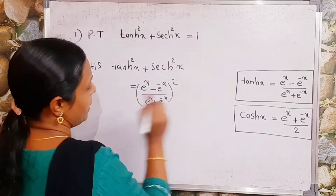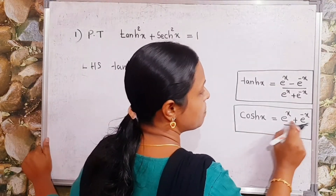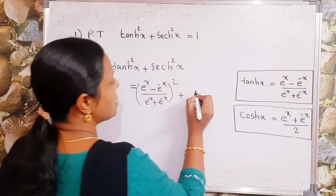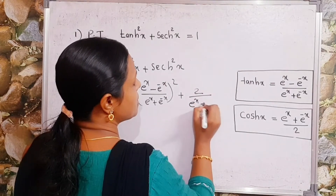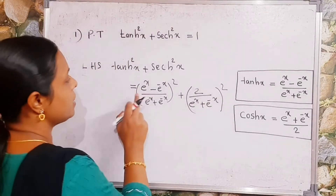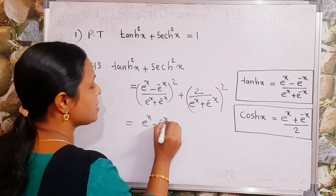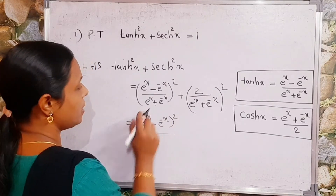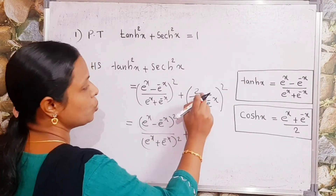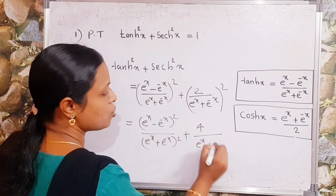Plus, next, sech²x. We know that cosh(x) = (e^x + e^(-x)) / 2, so taking its reciprocal we get sech(x). That is we write 2 / (e^x + e^(-x)) whole square. So the expression becomes: (e^x - e^(-x))² / (e^x + e^(-x))² + 4 / (e^x + e^(-x))².